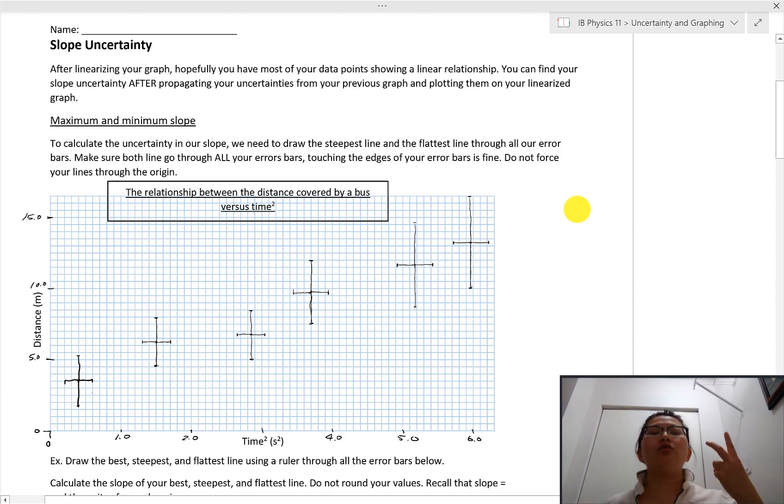You should have your error bars on your linearized graph. And if that means you have to propagate your uncertainties from your original data values, then you should have already done that as well. So you should know how to propagate your uncertainties in order to do this one.